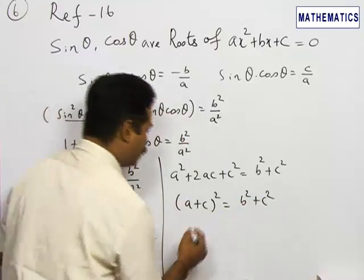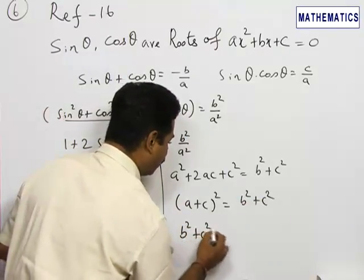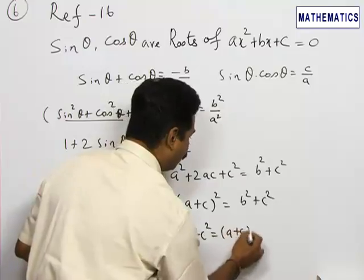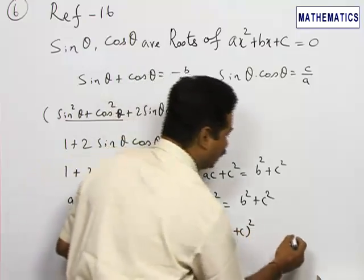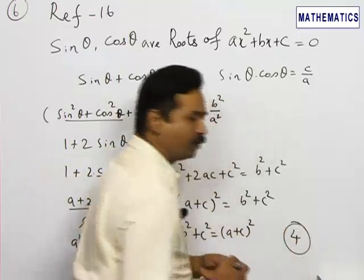...b² + c² = (a + c)² is the correct choice. The answer is 4, which is the correct choice.